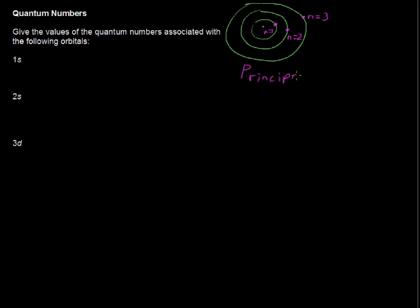So you can think of that as the distance from the nucleus, the principal quantum number, and that's this first number that's listed.